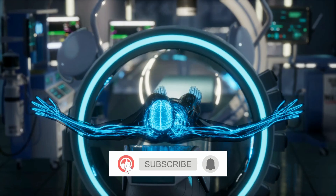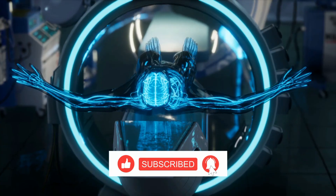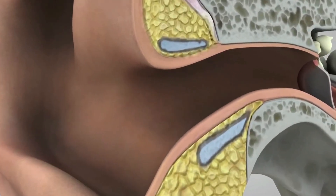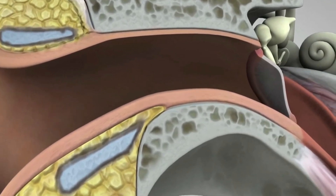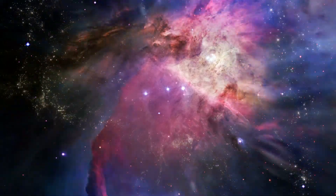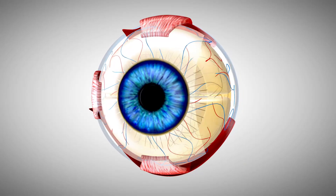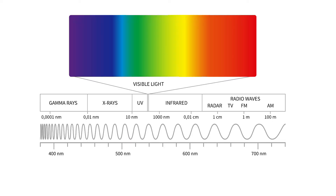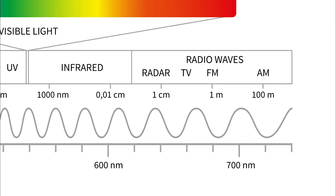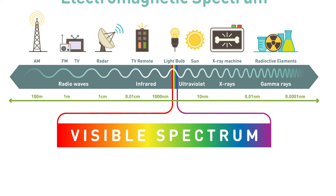What are gamma rays and how do they affect the human body and the earth? Just like there are sound waves we humans can't hear but other animals can, there is also an enormous range of light that our eyes can't detect. The electromagnetic spectrum describes all the wavelengths of light, both seen and unseen, where most of them are invisible to us. The entire spectrum consists of a wide range of light from radio waves to gamma rays.